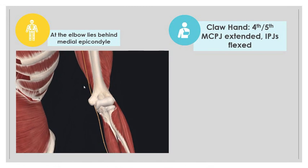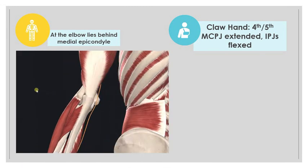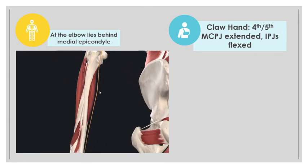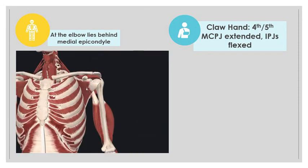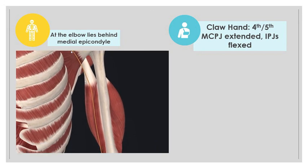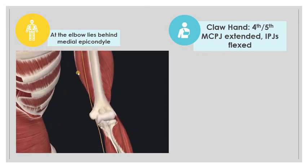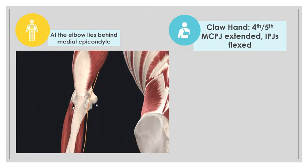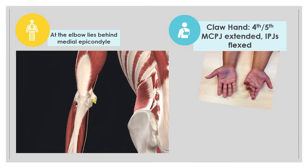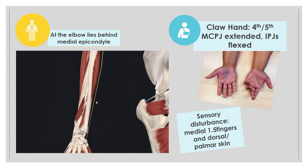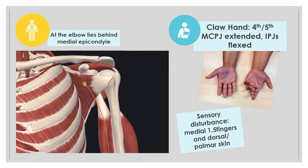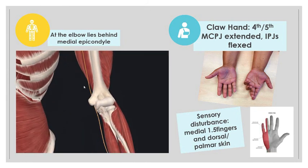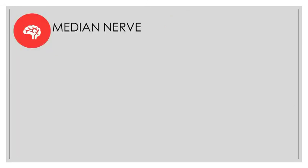The ulnar nerve innervates most of the intrinsic muscles of the hand, and most importantly clinically, it innervates the third and fourth — the medial two lumbricals — which act to flex the MTP joint and extend the interphalangeal joints. With an injury, you get unopposed extension of the MTP joints and weakened flexion of the IPJs, resulting in a claw hand deformity. Sensory innervation is to the medial one and a half fingers, which is where you typically get pain, tingling, or sensory loss following ulnar nerve injury.